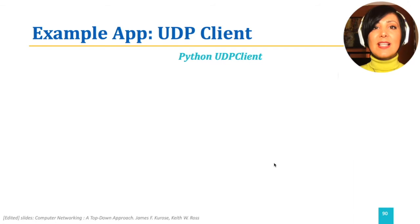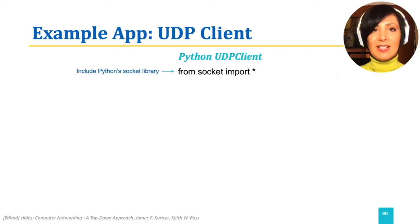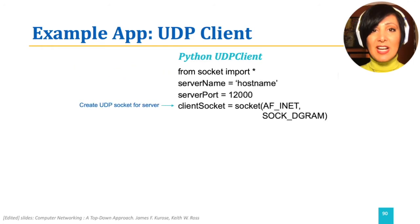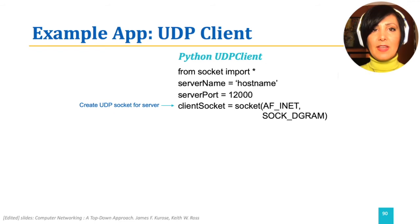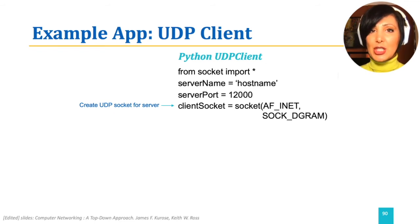The first line, 'from socket import *', includes Python's socket library in this code. Remember from client-server discussions that clients should know the server address? The next two lines of the code define the server name and port number that the server program will use for this communication.